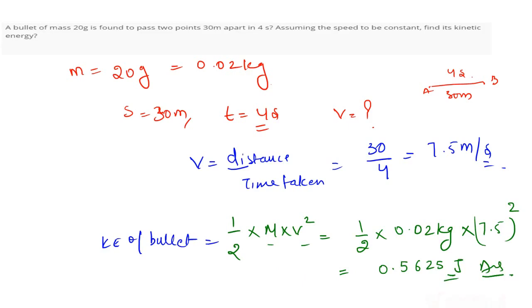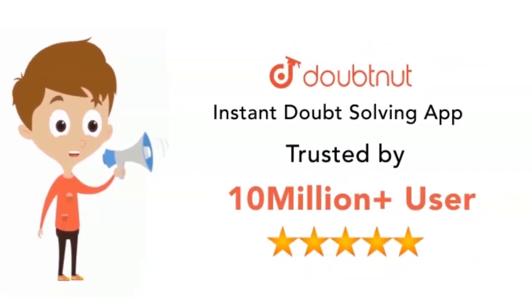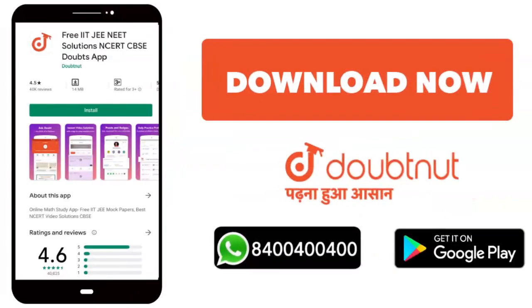It is very easy. Classes 6 to 12, NEET, IIT JEE Mains and Advanced level. More than 10 million students trust Doubtnet. Today, download the Doubtnet app or WhatsApp. Call us at 8444-400-400.